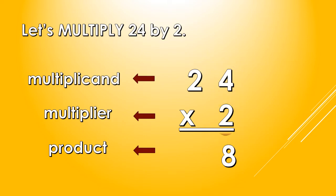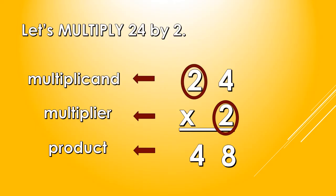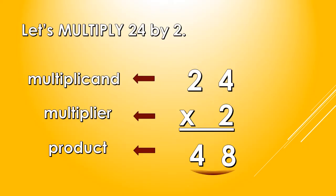And then, we multiply 2 again to the next digit from the right, which is 2. So 2 times 2, we get 4. So, our answer is 48. Meaning, Baker Farida must bake 48 cupcakes in all.